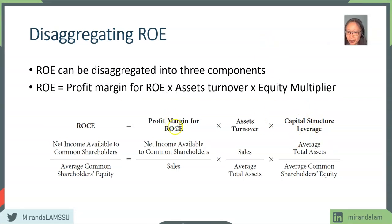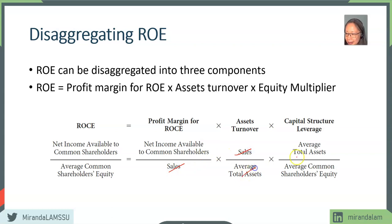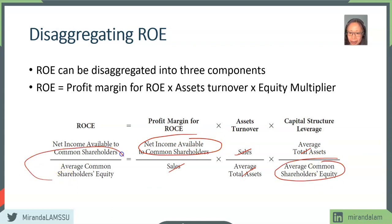Notice that the terms cancel out: sales cancels with sales, and total assets cancels with total assets. If you cancel all the terms, you get back the original formula: net income available to common stockholders divided by average common stockholders' equity. So the decomposed and original forms are the same — it's just a decomposition that gives us more information without changing the calculation.